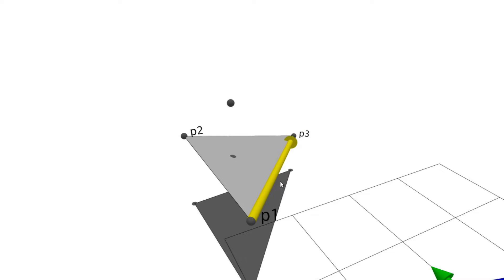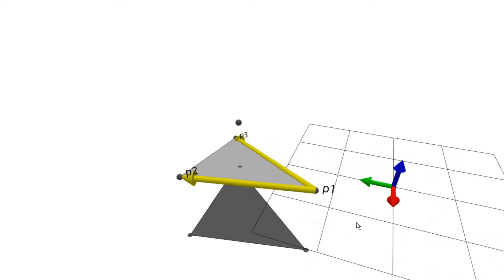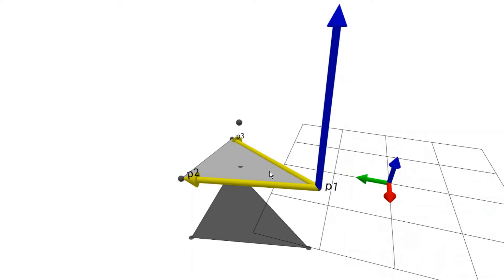To get the normal vector of this plane, we take the cross product of the vector from P1 to P3 and the vector from P1 to P2. Taking this cross product will get the normal vector.